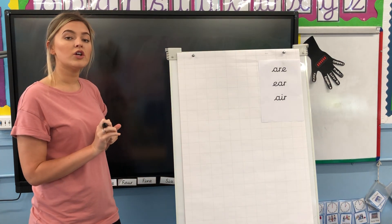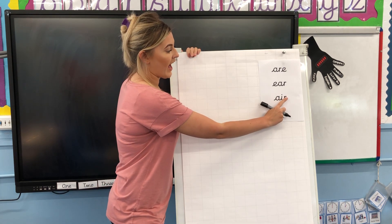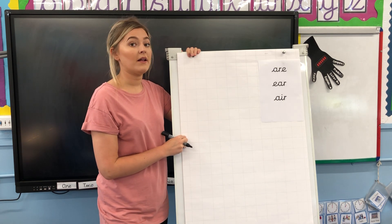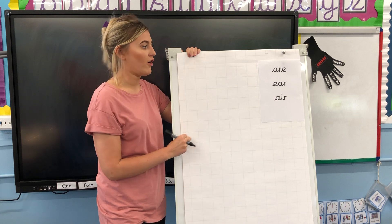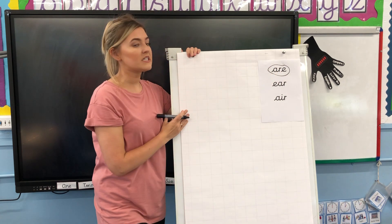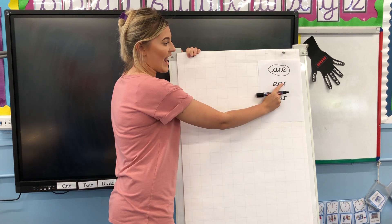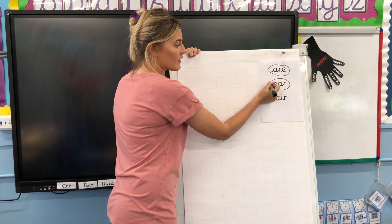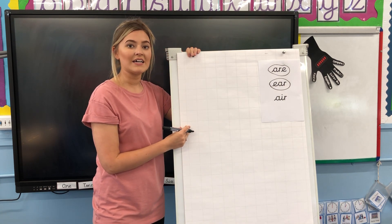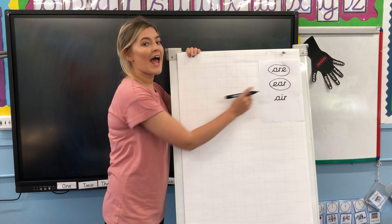I know that you can already spell the Air phoneme using the A-I-R. But today we are going to be learning a new way. We are going to be spelling the Air phoneme with the I-R-E, and we are going to be spelling the Air phoneme using the E-A-R. Now the E-A-R can also make the EA sound, but today we are not using the EA — we are using it as Air. My turn: Air. Your turn: Air.